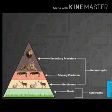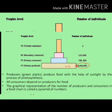Next is your pyramid of numbers. Producers produce food with the help of sunlight by the process of photosynthesis. All consumers depend on producers for food. The graphical representation of the number of producers and consumers in a food chain is called a pyramid of numbers, which keeps on decreasing when we move up towards the apex consumer.